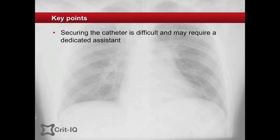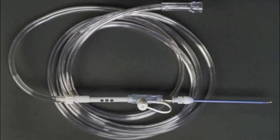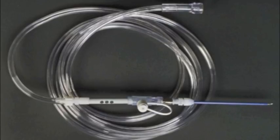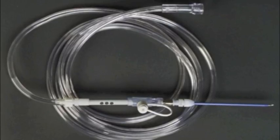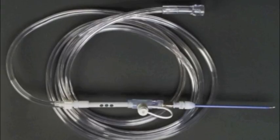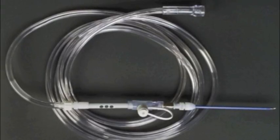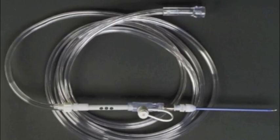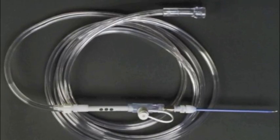Securing the catheter can be very difficult and may require a dedicated person to prevent kinking or dislodgement. Commercial kits have been developed to allow for easy delivery of the high-flow oxygen to the patient. One end is connected via the lure lock to the catheter, while the other is connected to the high-flow oxygen. Oxygen is delivered by occluding the holes, as shown here.